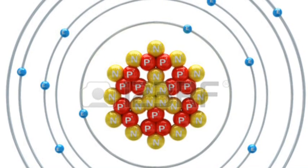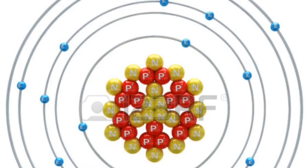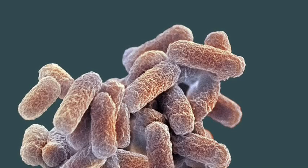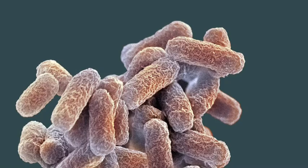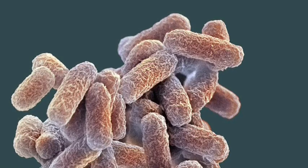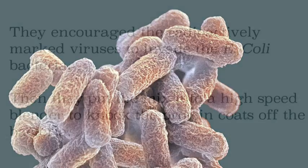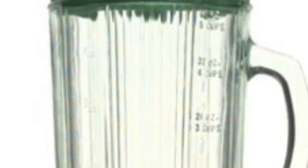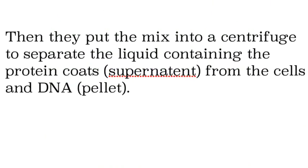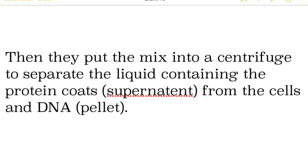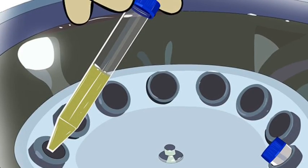They let a bacteria culture of E. coli start to grow. Once it reproduced, they split it into two groups: one group they added radioactive phosphorus, and the other group they added radioactive sulfur. They let the virus inject into the bacteria, then put it in a blender and spun it around so that the protein coats would fly off the bacteria. Then they put it in a centrifuge, which spins even faster — around 5,000 RPM — putting the light part, the protein coat and liquid, at the top, and the cells and whatever's inside them at the bottom.